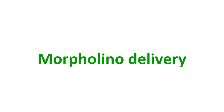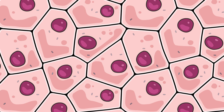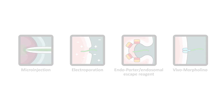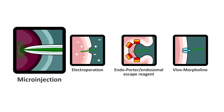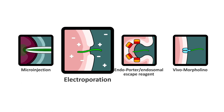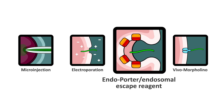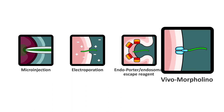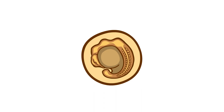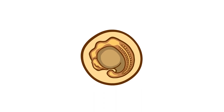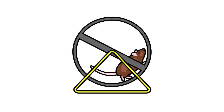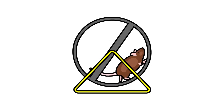Morpholino delivery. There are many methods for delivering morpholinos into cells. In 2019, methods commonly used include microinjection — especially into embryos — electroporation using pulses of voltage to make cells leaky, the endoporter endosomal escape reagent used for tissue culture, and vivo morpholinos, which have a group covalently attached to the oligo to help it get into cells in cultures and in adult animals. Morpholinos are widely used in developmental biology for knockdown in embryos. Vivo morpholinos are effective in many adult animal systems, such as mice and rats.